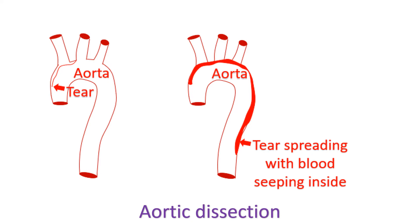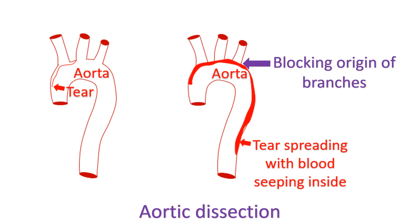Aortic dissection is a tear in the inner lining of the aorta. Blood seeps into the wall of the aorta and spreads along it. As this progresses, it can obstruct the openings of the major branches. In those coming to the emergency department with severe chest pain or upper back pain, if there is a large difference in blood pressure between the arms, this serious condition must be considered.